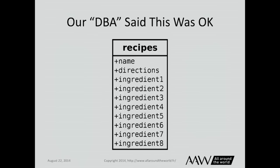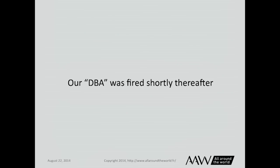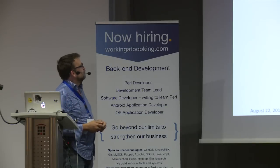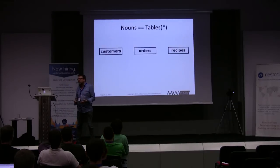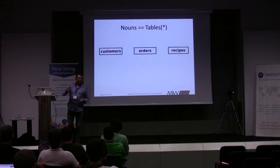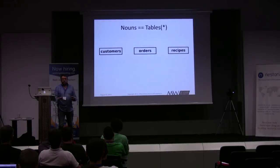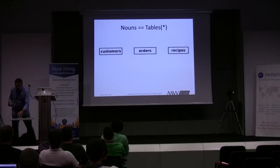All the ingredients are in one table — why is that bad? Because ingredient 8 was a CSV field. For those who don't know database design, that's the key problem. Getting back to the basics: customers can order recipes. So I said nouns equal tables — that's sort of true. We have three nouns to focus on: customers, orders, and recipes. Those are our three tables.